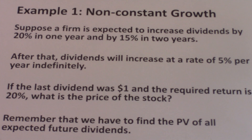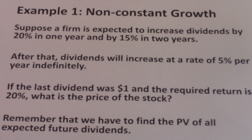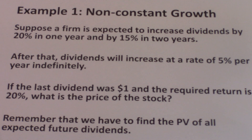Suppose a firm is expected to increase dividends by 20% in one year and by 15% in two years. After that, dividends will increase at a rate of 5% per year indefinitely. If the last dividend was $1 and the required return is 20%, what is the price of the stock? Remember that we have to find the present value of all expected future dividends to determine the price of the stock.